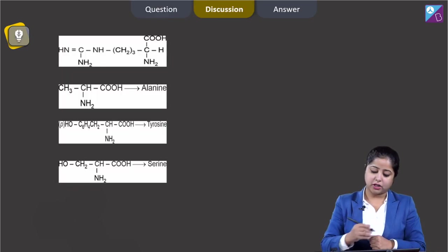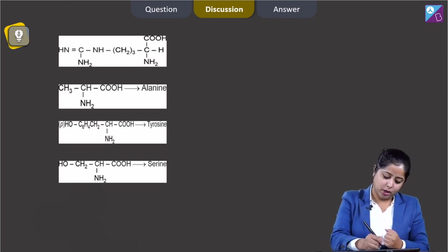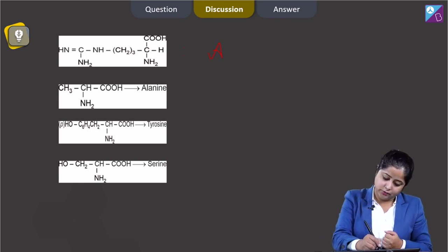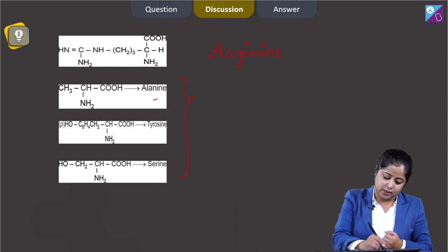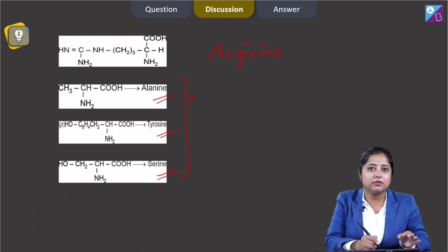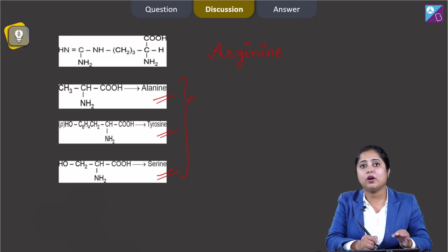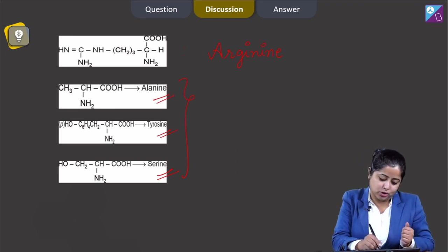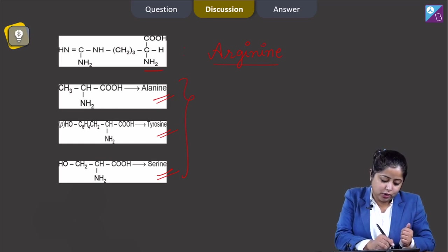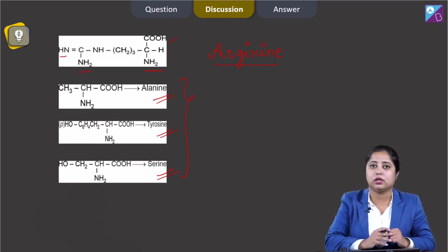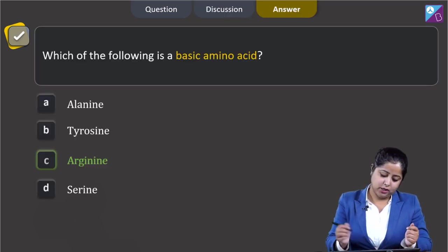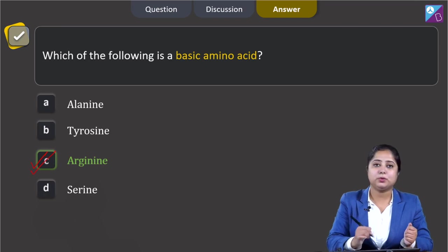Looking at the structures of the given amino acids: arginine has 3 amino groups and only 1 carboxyl group, making it basic. Alanine, tyrosine, and serine are also shown. The only amino acid among the given options where amino groups exceed carboxyl groups is arginine. So the correct answer is option number C.